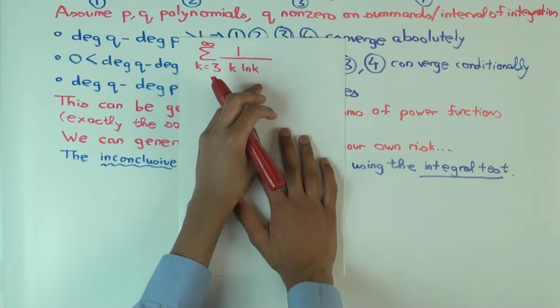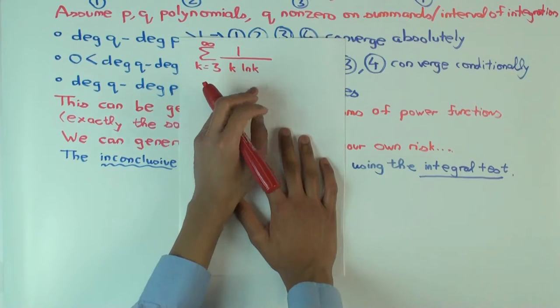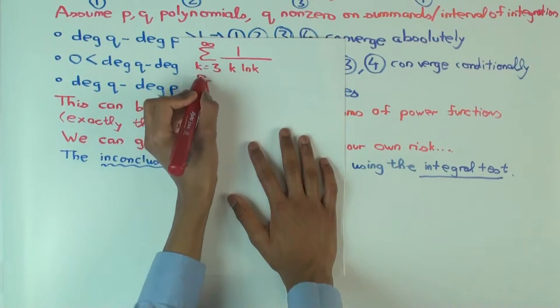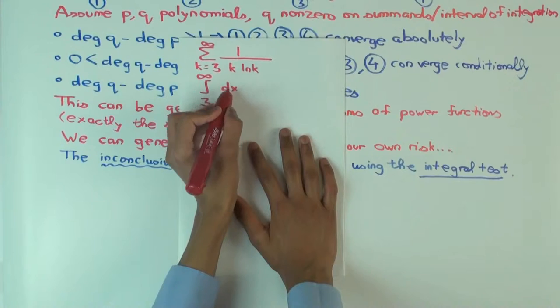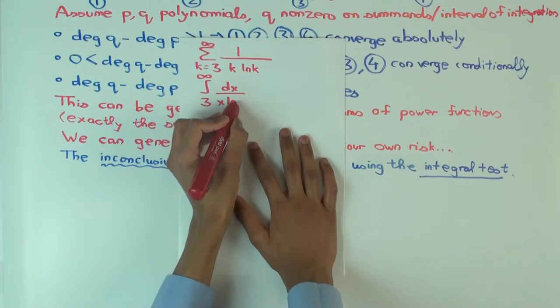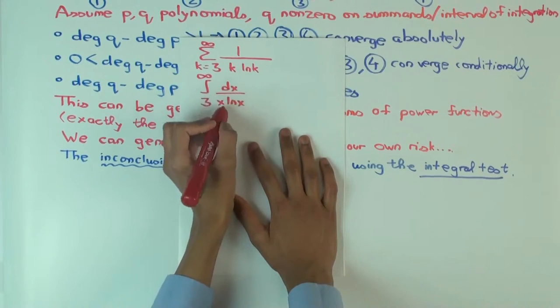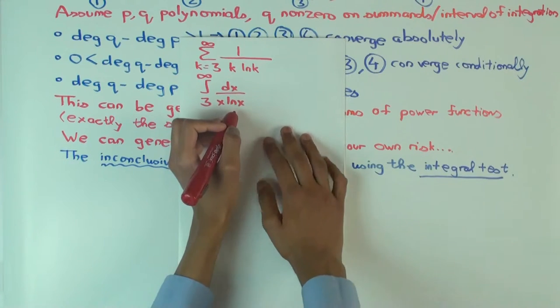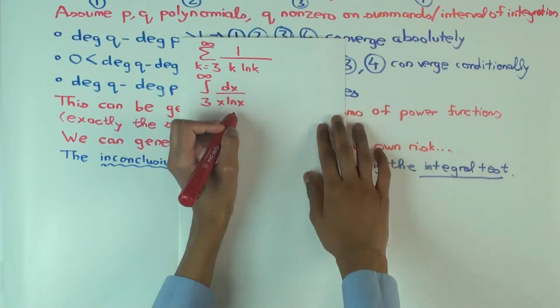Just change the summation sign to integral sign. And I will also change the variable to x. And does that mean that integral and the summation should be equal? No. It just means one converges if and only if the other. So what is this? Well, what's the indefinite integral for 1 over x ln x? It is...